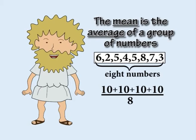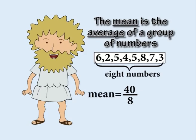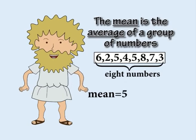That's a total of four tens, or forty. There are eight numbers. So the mean is forty divided by eight, which is five.